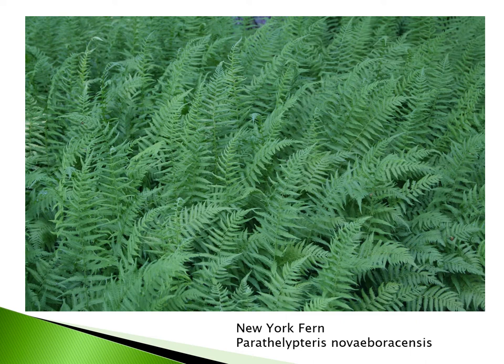New York fern is another species similar to hay scented fern — another one I have a love-hate relationship with. The New York fern does not get to be as tall as hay scented fern, growing only to about a foot to 15 inches, whereas hay scented fern can reach two feet or taller. It's a great low-growing ground cover — a very aggressive species, not suggested for the garden, yet wonderful for naturalizing. Both hay scented fern and New York fern, Thelypteris noveboracensis, are deer tolerant — deer will not browse either species, making them great understory plants where deer are a problem.